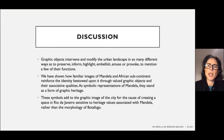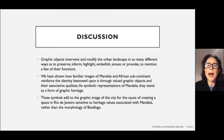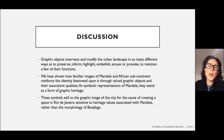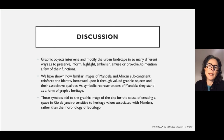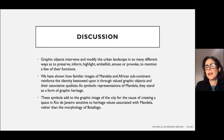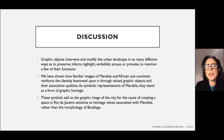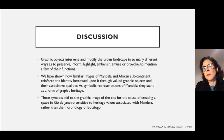Graphic objects intervene and modify the urban landscape in many different ways — to preserve, inform, highlight, embellish, amuse or provoke, to mention a few of their functions. We have shown how familiar images of Mandela and the African subcontinent reinforce the identity bestowed upon the square through valued graphic objects and their associative qualities. As symbolic representations of Mandela, they stand as a form of graphic heritage. These symbols add to the graphic image of the city for the cause of creating a space in Rio de Janeiro sensitive to heritage values associated with Mandela, rather than the morphology of Botafogo.